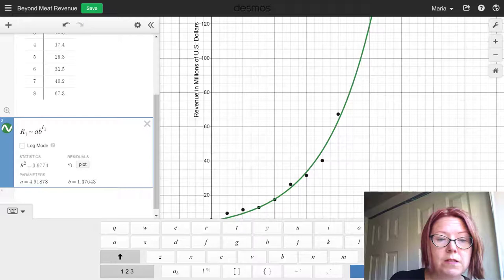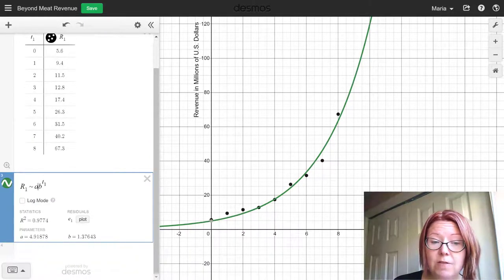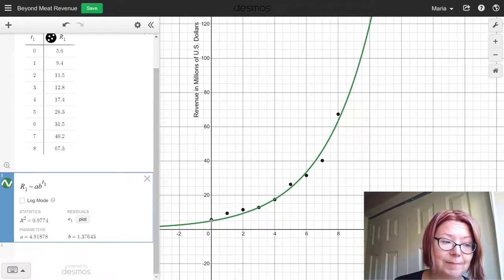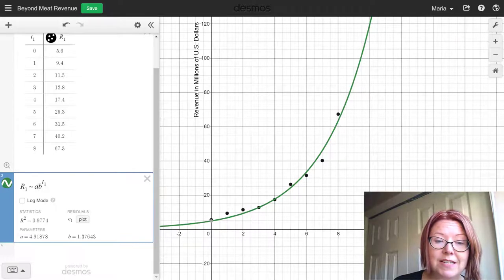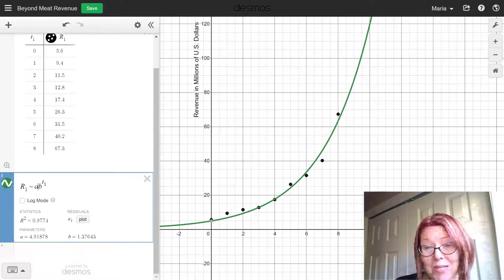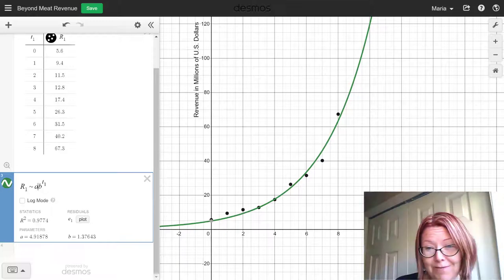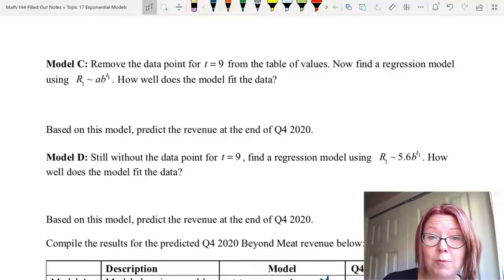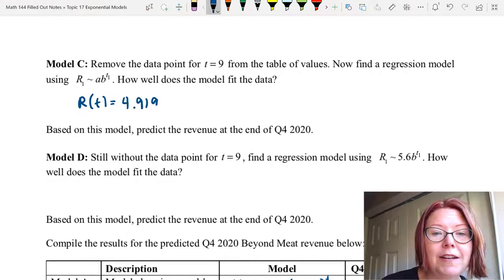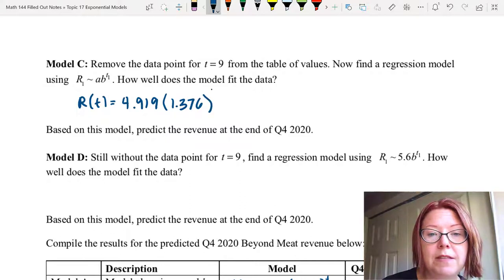And so the result is an initial value A of 4.9187 or let's just say 4.919 and a growth factor of 1.3764 or let's just round that to 1.376. Here we can see again that the model looks pretty good. It goes through some of the data points. It's got some data points on the left and the right of it. It's an increasing exponential function. Let's go ahead and write our model down. It's capital R of t equals 4.919 left parentheses 1.376 right parentheses to the t power.